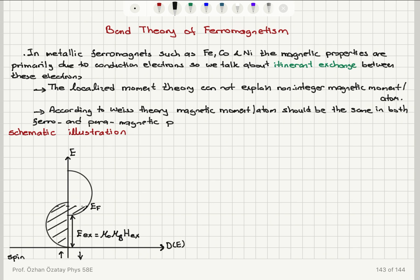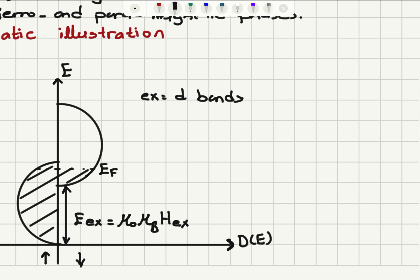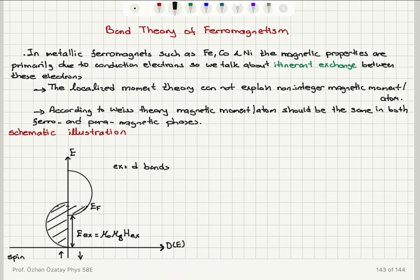Here is a schematic illustration, for example for D bands. We have energy bands formed by the electrons, with energy as a function of density of states. Spin up and spin down bands normally should have degeneracy, but the exchange interaction causes a splitting of these bands by the amount μ₀μ_B H_x — that is, the Bohr magneton times the exchange magnetic field H_x — causing splitting in the spin subbands.